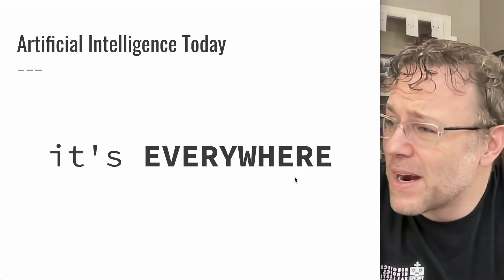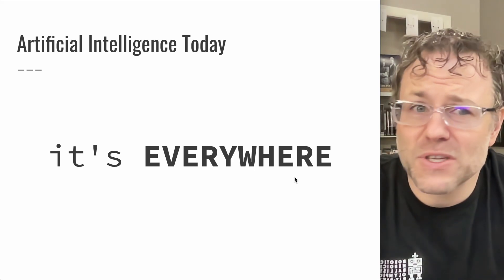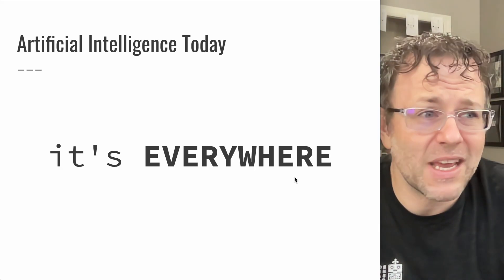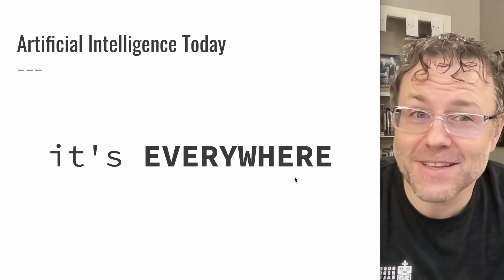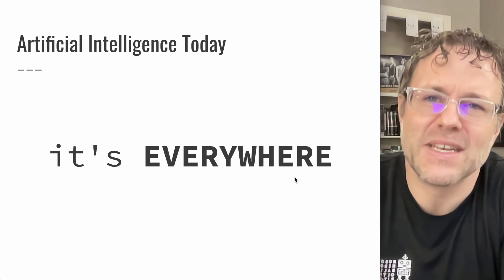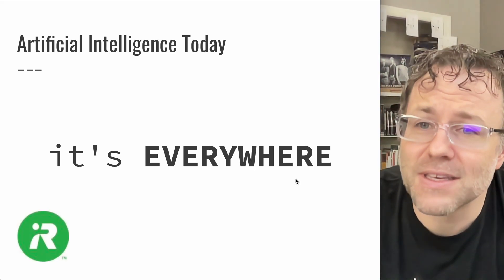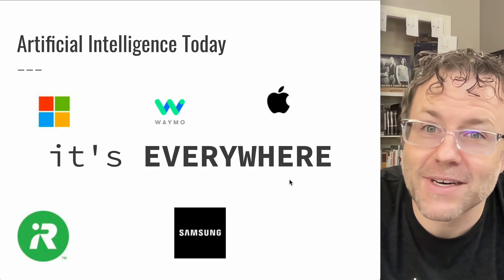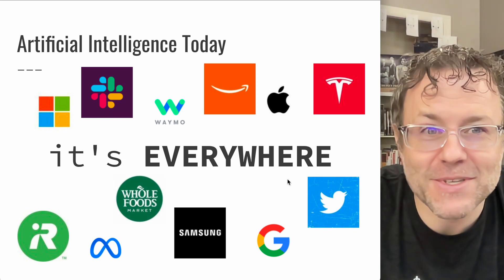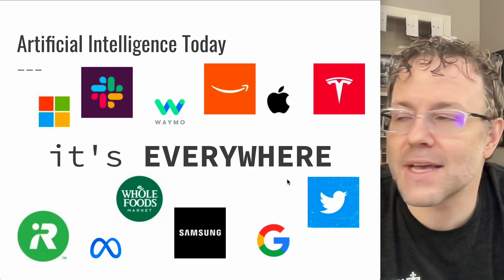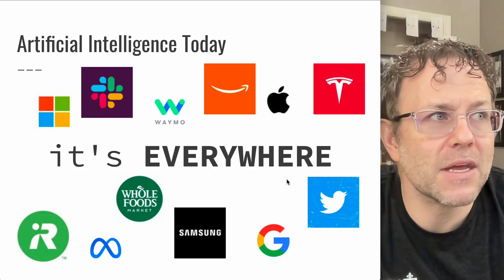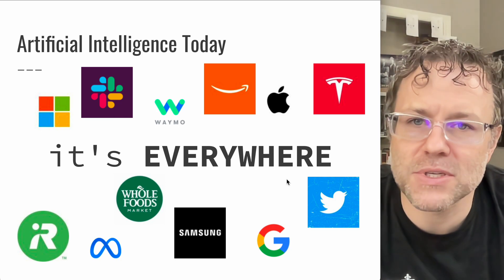The thing about artificial intelligence today is that it's everywhere. Whether you recognize it or not, AI has come up in a lot of applications — everything from sophisticated image recognition, identifying different actions in sporting events, all the way to cars with lane detection. All of that is driven by AI and machine learning techniques. You can see companies like iRobot, Apple, Microsoft, Samsung, Waymo, Tesla, Google, Slack, Meta, Twitter, even Whole Foods and Amazon all applying AI techniques. Over the last 10 years, these companies have harnessed this capability pretty effectively for new products and new approaches to the way they operate their businesses.